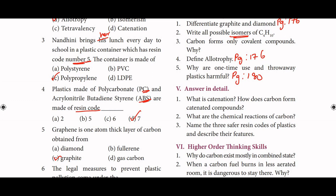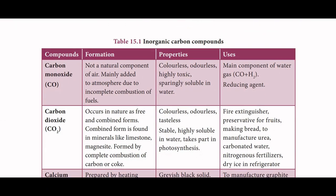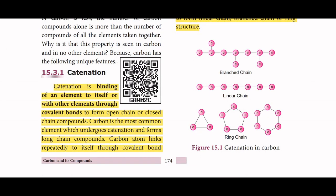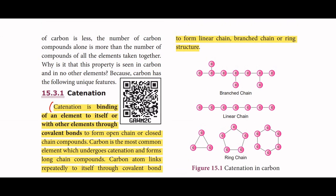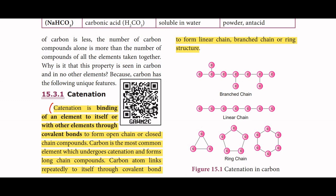Answer in detail: What is catenation? How does carbon form catenated compounds? The answer is on page number 174. Catenation is the binding of an element to itself or with other elements through covalent bonds to form open chain or closed chain compounds. Carbon is the most common element which undergoes catenation and forms long chain compounds. Carbon atoms link repeatedly to itself through covalent bonds to form linear chain, branch chain, or ring structures.